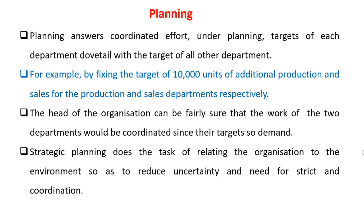Next is planning. Planning ensures coordinated effort. Under planning, targets of each department are dotted with the targets of all other departments. For example, by fixing the target of 10,000 units of additional production and sales for the production and sales departments respectively, the head of the organization can be fairly sure that the work of those two departments would be coordinated since their targets show demand.